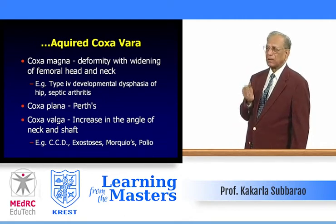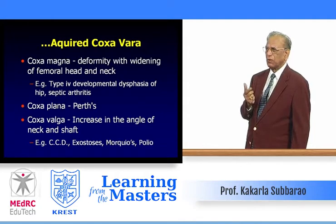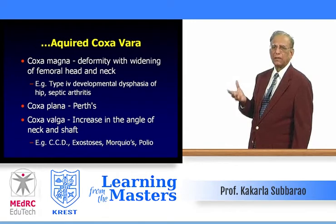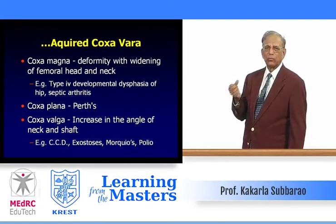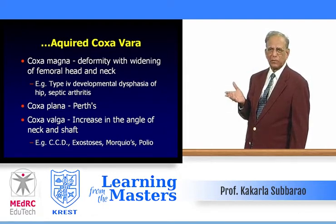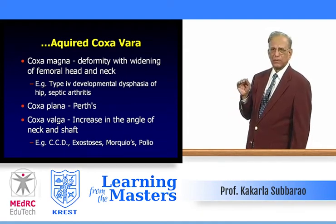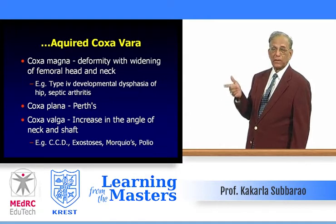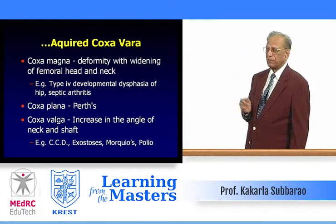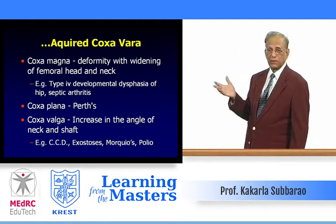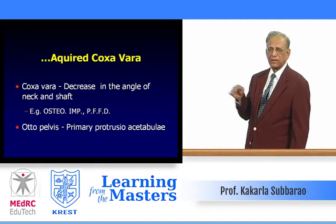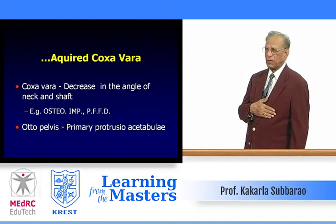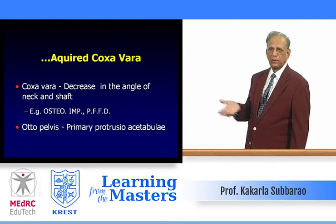We need to know certain definitions. Coxa magna is deformity with widening of the femoral head and neck, often occurring in epiphyseal dysplasia or type IV developmental dysplasia of the hip, and occasionally in septic arthritis with hyperemia. Coxa plana — the classical example is Perthes disease — involves flattening of the femoral head epiphysis. Coxa valga is an increased neck-shaft angle, occurring in cleidocranial dysostosis, multiple exostoses or osteochondromatosis, and in polio. Coxa vara is a decreased neck-shaft angle, occurring in osteogenesis imperfecta and proximal femoral focal deficiency.